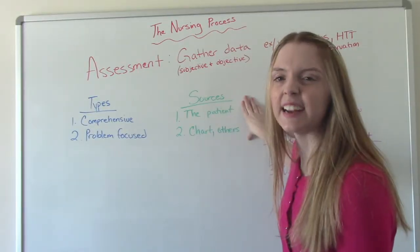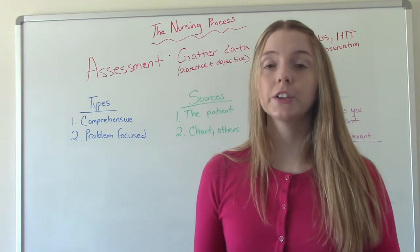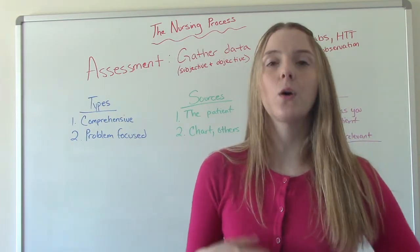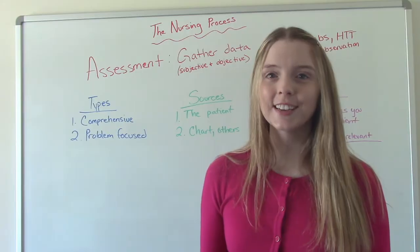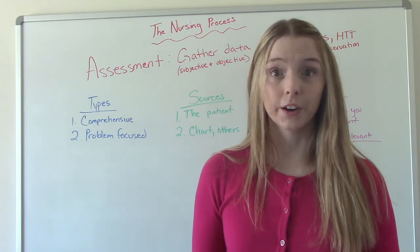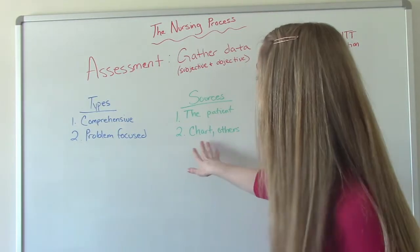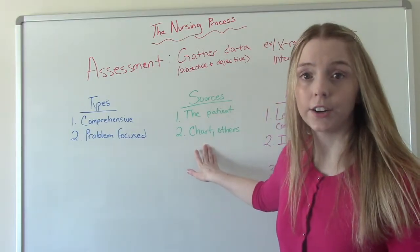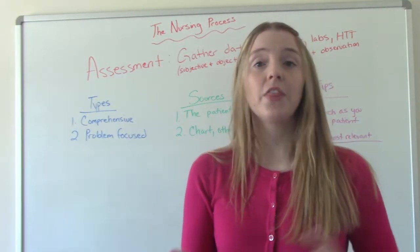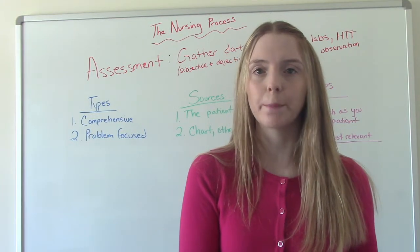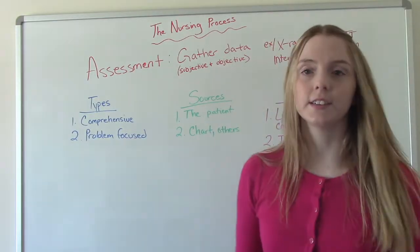So where do we get this data? We have two sources. The patient is number one, and the patient should always be number one. The patient is considered the best source because they know their bodies better than anybody else. There are times when a patient is very confused and they're not the most reliable reporters — they won't be the best source in that situation — but usually the patient is number one. Number two is the chart, their medical record, and then others: their caregivers, family members, or other people on the healthcare team. The nurse leaving the shift before you, who took care of that patient for 12 hours, knows that patient better than you do if you've never met them.